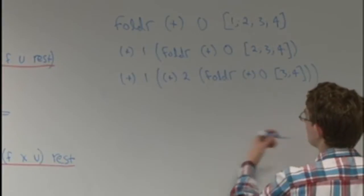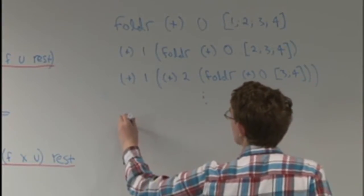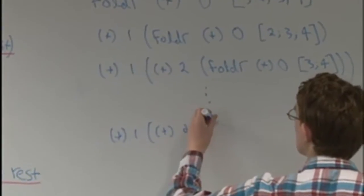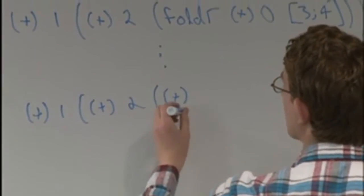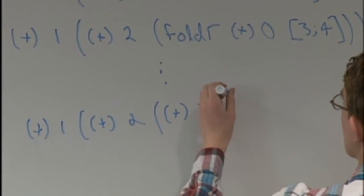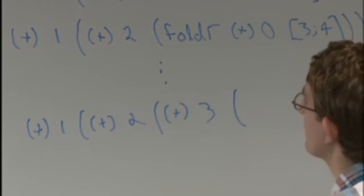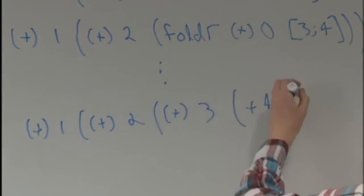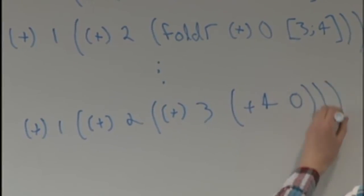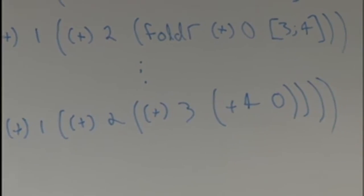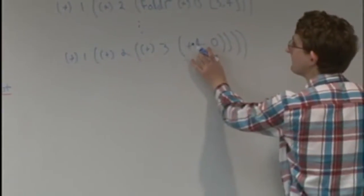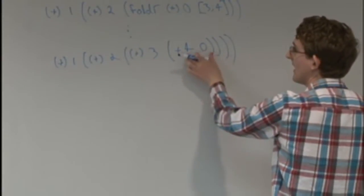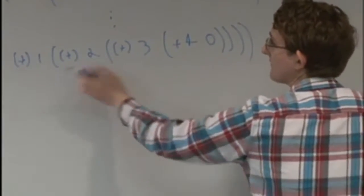Going down the line until we get to the end, it eventually looks like plus one, plus two, plus three, and then we reach the base case: plus four and zero, closing all of these off. And finally we get something we can evaluate. The reason we call it fold right is because it has to get all the way to the right end of the list, and then it folds these up from right to left.